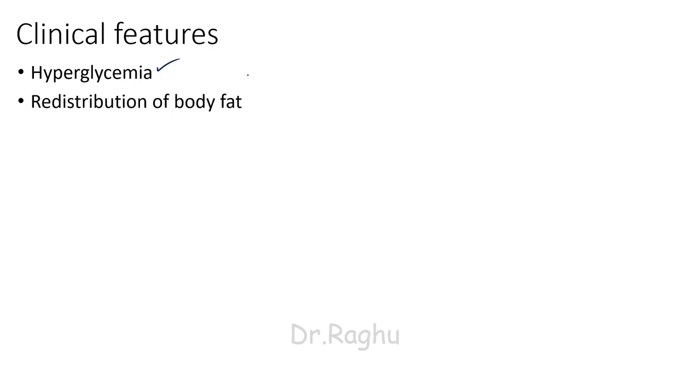To understand the clinical features, you must be well versed in the actions of cortisol. The first clinical feature is hyperglycemia — an increase in blood glucose level — which is attributable to cortisol's action on carbohydrate metabolism. There is also going to be a redistribution of body fat. Regarding cortisol's action on fat metabolism, it generally causes lipolysis and generation of free fatty acids.